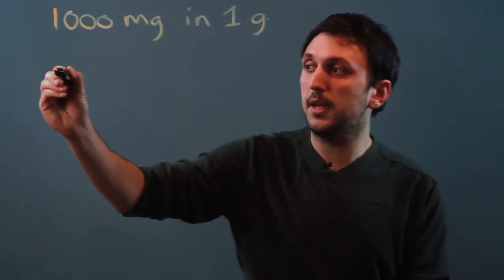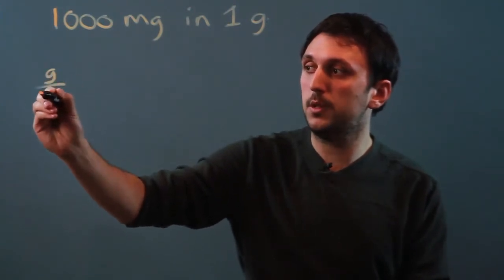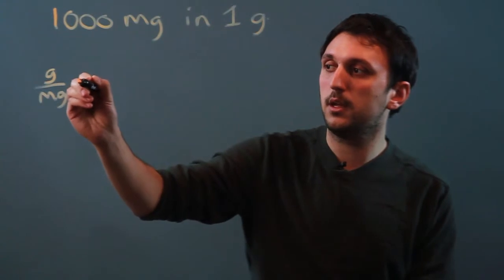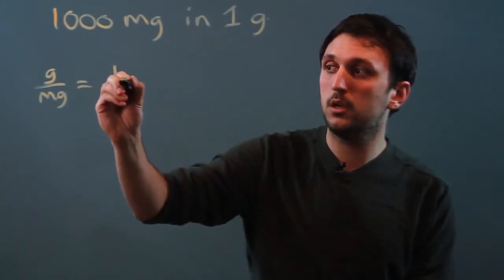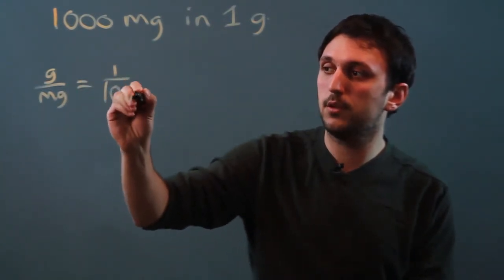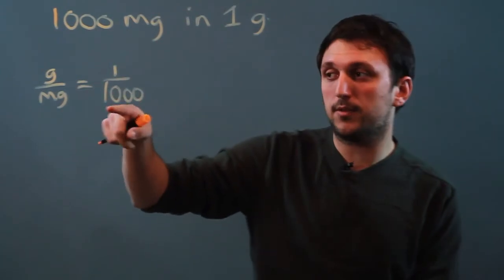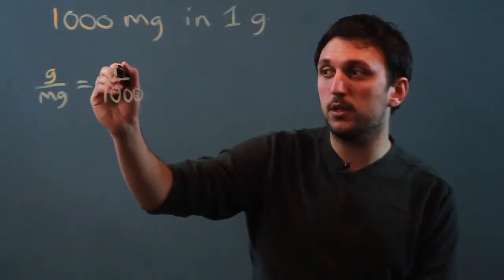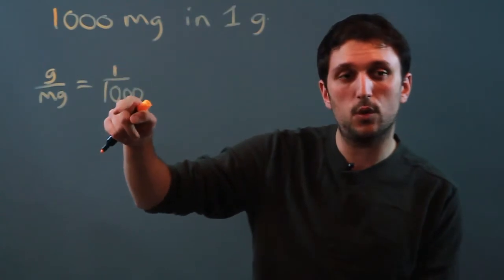So, what I like to do is say grams over milligrams equals one over one thousand. Now, I do this mainly because I like the big number on the bottom. You can definitely say milligrams over grams equals a thousand over one.